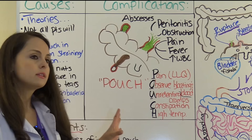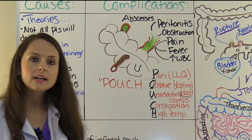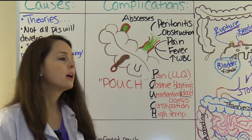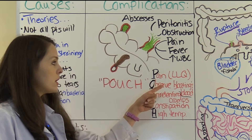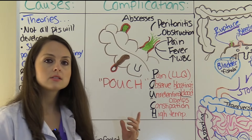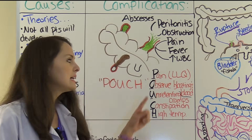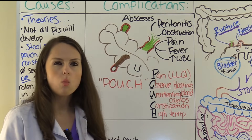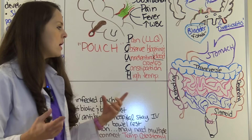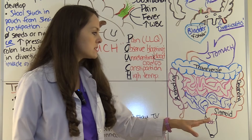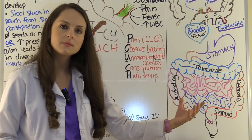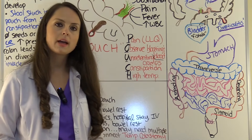How can you remember the typical signs and symptoms for diverticulitis? Remember the word POUCH, because we have an inflamed pouch. P is for abdominal pain — a lot of times the pain is going to be most likely in the left lower quadrant. Why the left lower quadrant? Think back to your anatomy: most diverticulosis is in your sigmoid colon, which tends to be in the left lower quadrant.